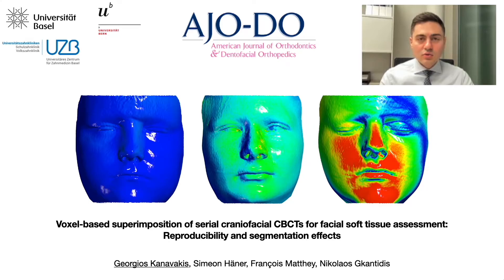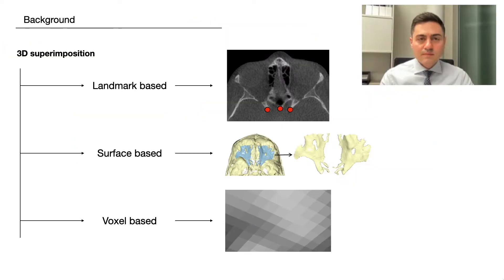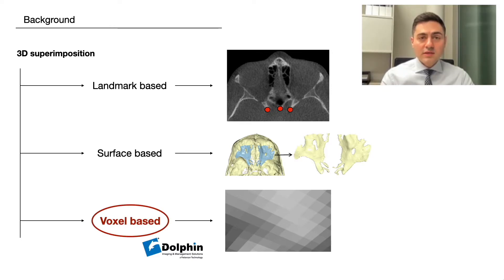This study is about using voxel-based superimposition of serial CBCTs in order to assess facial soft tissues. When we superimpose three-dimensional CBCT volumes, we can either use landmarks as superimposition references, segment a surface from the entire volume to use as a reference structure, or superimpose on the voxels describing a stable structure of reference. Voxel-based methods have the advantage of utilizing real volumetric data for the superimposition and therefore are prone to less error. In this study, we tested the voxel-based superimposition method applied through Dolphin Software, which is largely used in clinical settings.